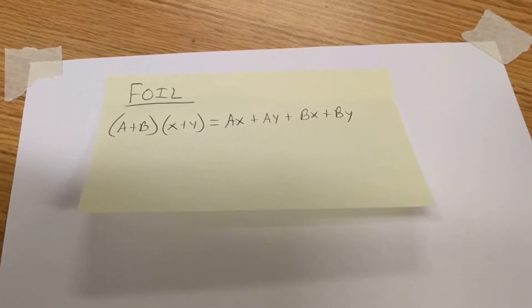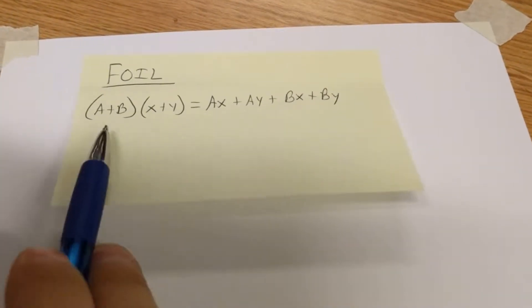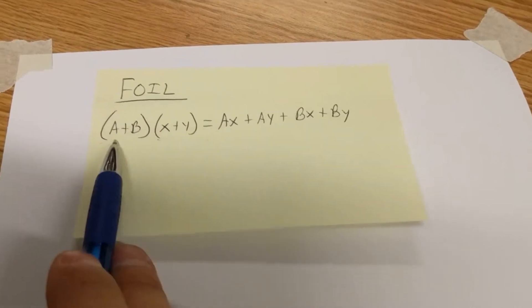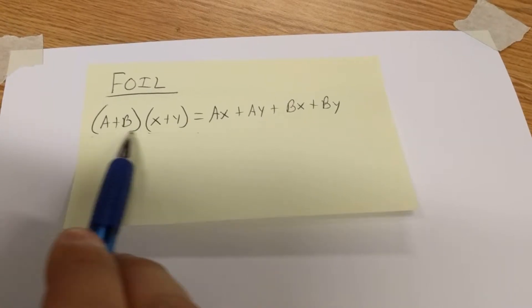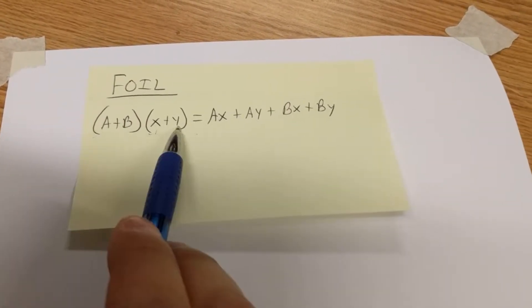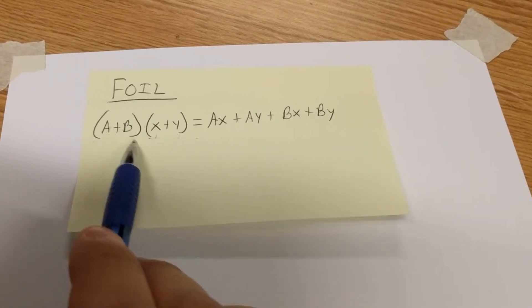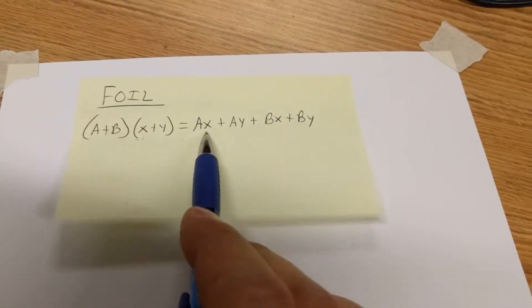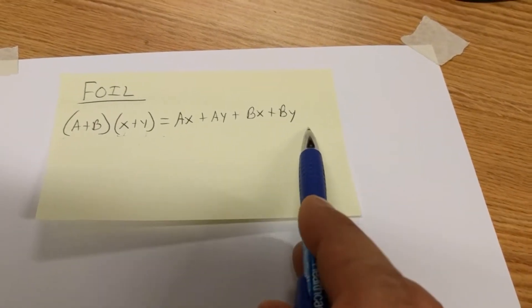We're all familiar with the FOIL method. When we have two binomials, such as a plus b times x plus y, we know that we take the first, outer, inner, last as given by the FOIL acronym. So a times x are the first two terms. Then we add a times y, which are the outer terms. Then the inner terms, b times x, and then the last term, b times y. We get ax plus ay plus bx plus by as our final solution.